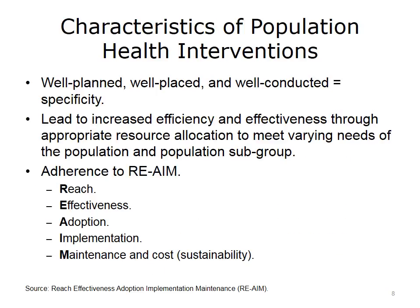What are the characteristics of population health interventions? We would like all of our interventions to be well-planned, well-placed, and well-conducted, meaning highly specific. We hope that our interventions will lead to increased efficiency and effectiveness by allocating the right resources to the right subgroups of the population. In other words, we don't want to apply a very intensive or high-cost intervention to a low-risk subgroup of the population. We want our interventions to adhere to the RE-AIM framework, originally developed for consistent reporting of research results but now used to translate research into practice and plan programs in real-world settings.